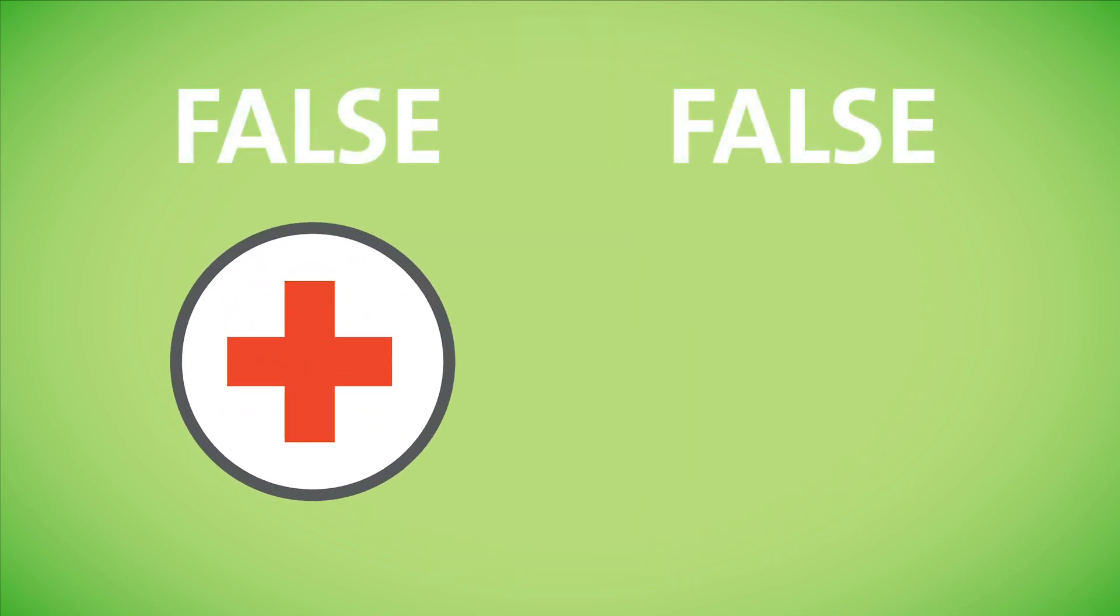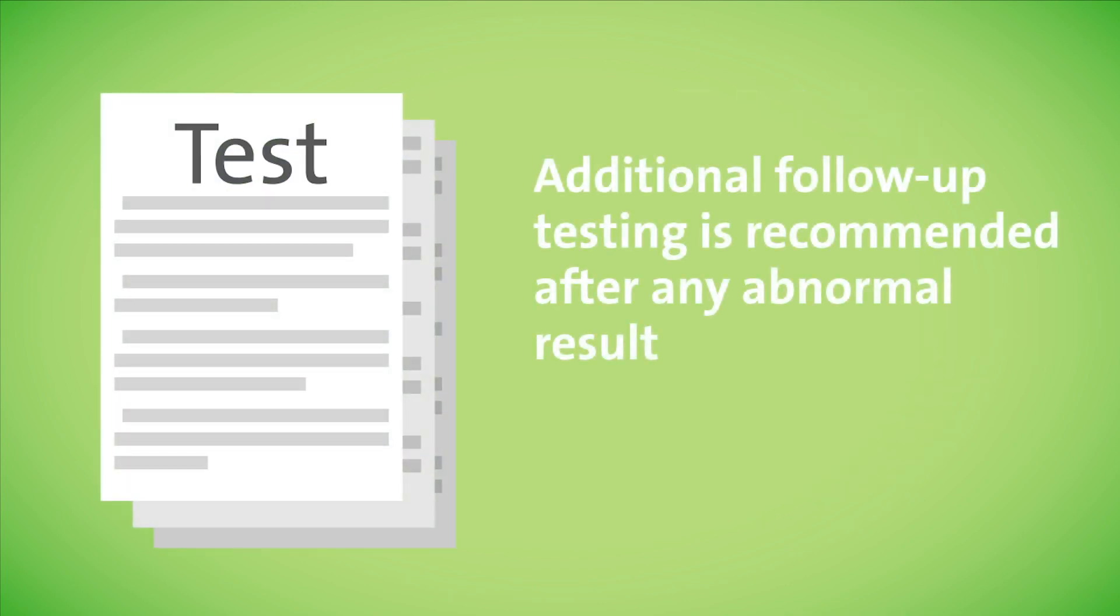Screening tests can have both false positives and false negative results. False positive results are when the lab reports a high risk for a chromosome abnormality in a healthy baby. False negative results are when the lab misses when the baby has a problem. Since a screening result does not say if the baby is affected or not, additional follow-up testing is recommended after any abnormal result.